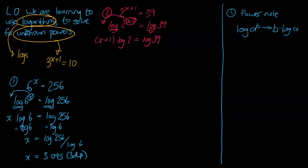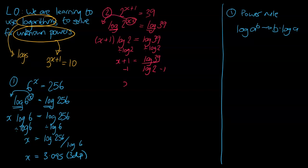I'm going to carry on with algebraic procedures. This is currently times log 2, so I'm going to divide by log 2 on both sides. This also has the benefit of unlocking the bracket, which means we can get to x. So x plus 1 equals log 39 divided by log 2. Final step: we've got to get rid of that plus 1, so we go minus 1 on both sides, which means x equals log 39 divided by log 2, minus 1.